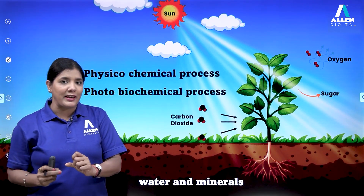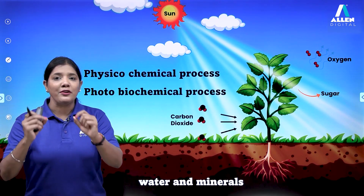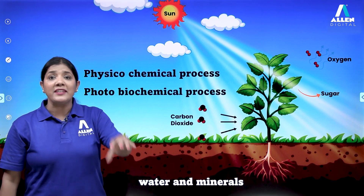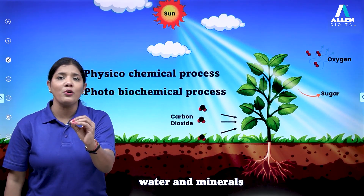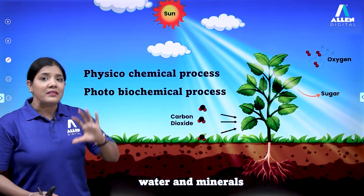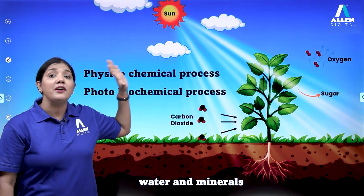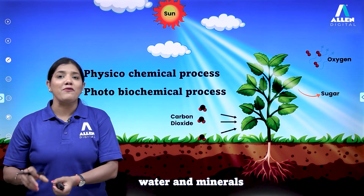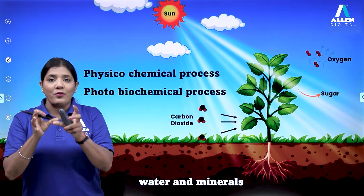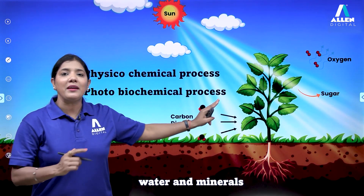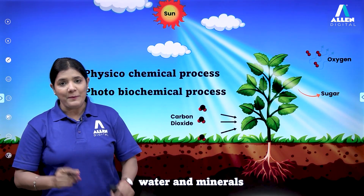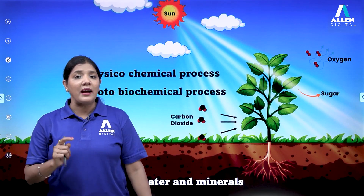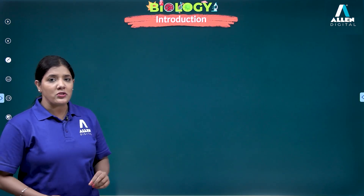Photosynthesis is also called a photo biochemical process. 'Photo' refers to photons of sunlight. Inside a living organism — a biological entity — the green parts of the plant have a specialized structure called the chloroplast, which contains the chlorophyll pigment. That pigment absorbs photons of light and through a chemical process makes glucose. Since there is involvement of photons inside a living cell where a biochemical reaction occurs, it is called a photo biochemical reaction.